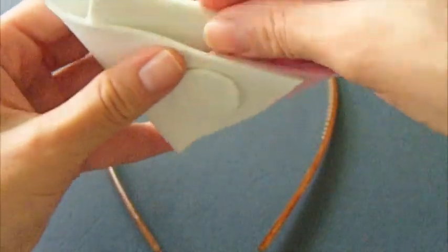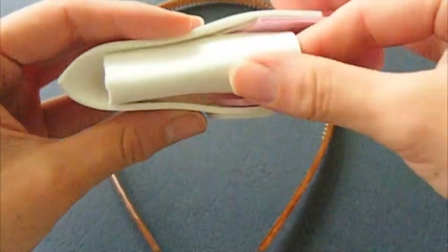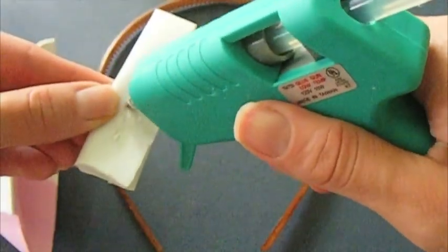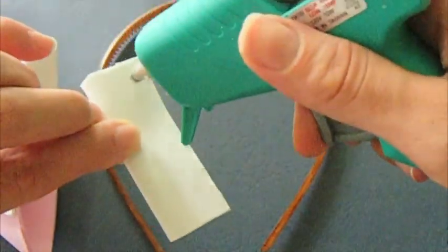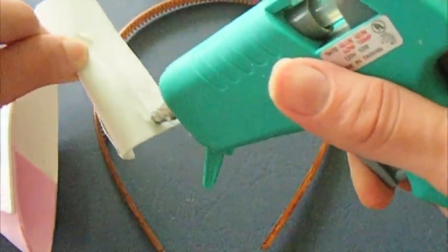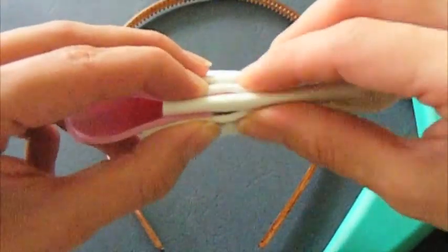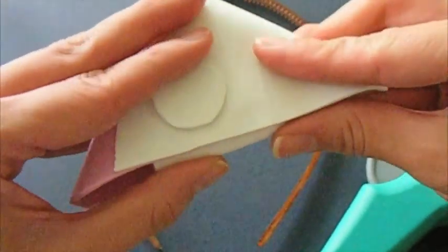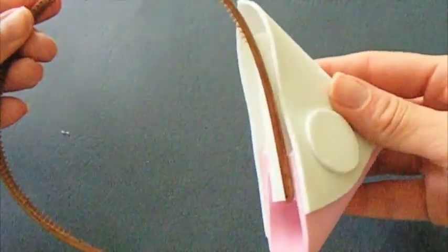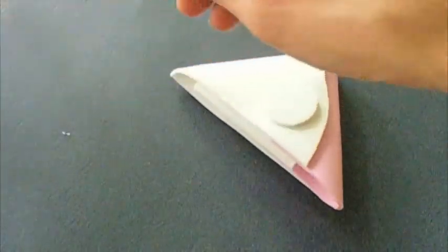Once your ears are hollow, it will be hard to glue them onto the headband, so to help you out, you're going to glue a piece of white foam paper on the inside of the ear. When you're done, just add some glue to the headband and stick your ears on.